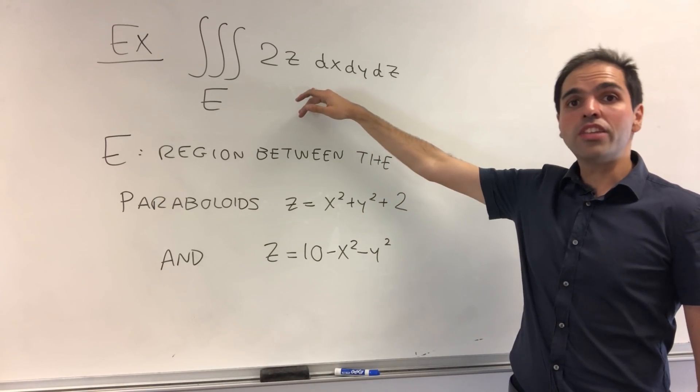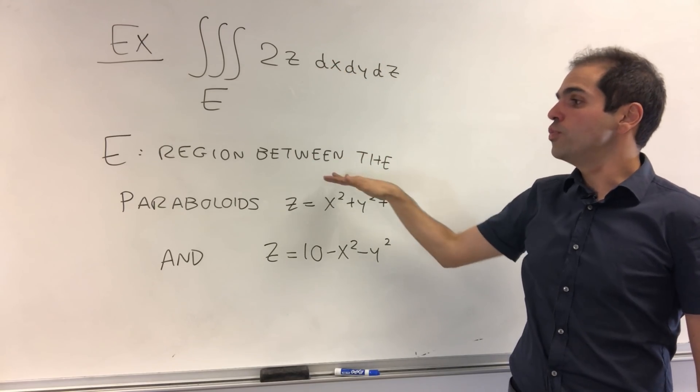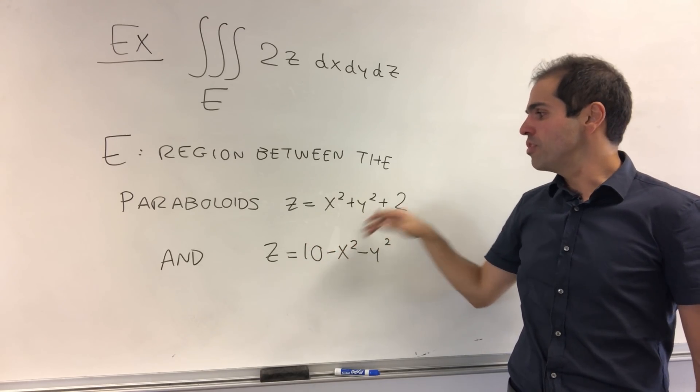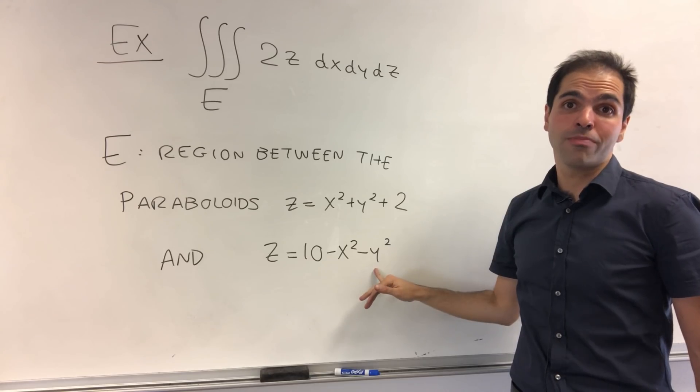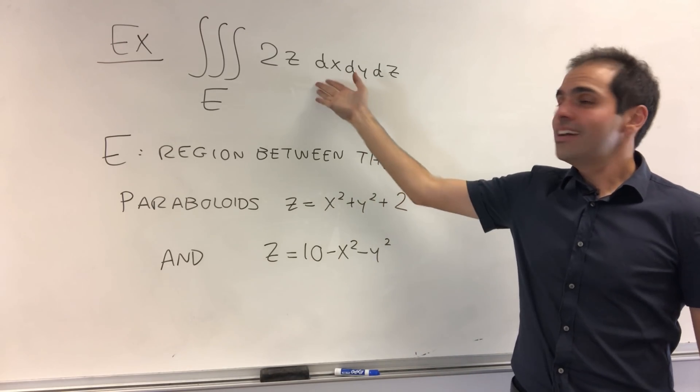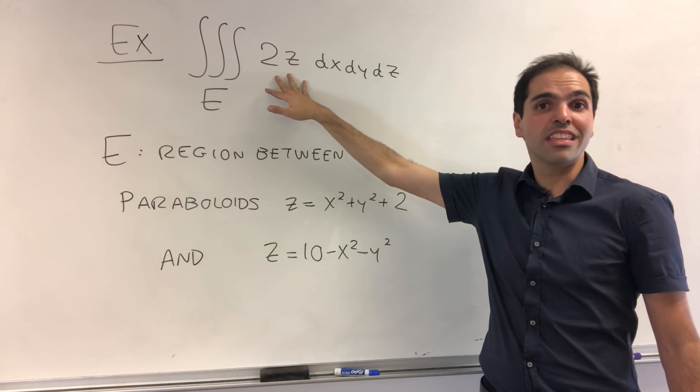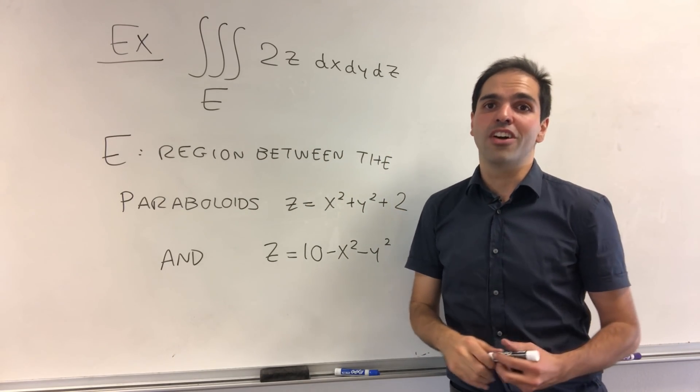So today, let's try to evaluate the triple integral of the function 2z over the region between the paraboloids, z equals x squared plus y squared plus 2, and z equals 10 minus x squared minus y squared. At this point, I usually like to motivate this by saying if 2z were the density of an object, then the triple integral is the mass of the object.